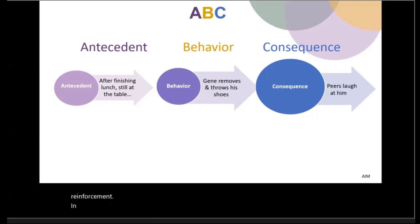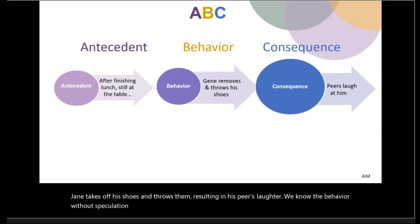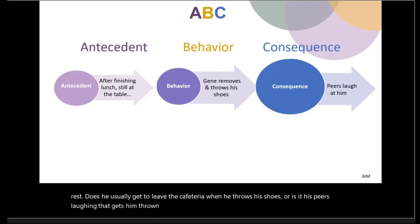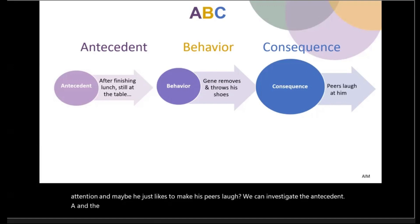In this example, after finishing lunch still at the table, Gene takes off his shoes and throws them, resulting in his peers' laughter. We know the behavior — he threw his shoes — but we need to do some investigating with the rest. Does he usually get to leave the cafeteria when he throws his shoes? Or is it his peers laughing that gets him thrown out? Or is he simply motivated by the peer attention and likes to make his peers laugh? We can investigate the antecedent (A) and the consequence (C) to shape the behavior (B). It's the only way.